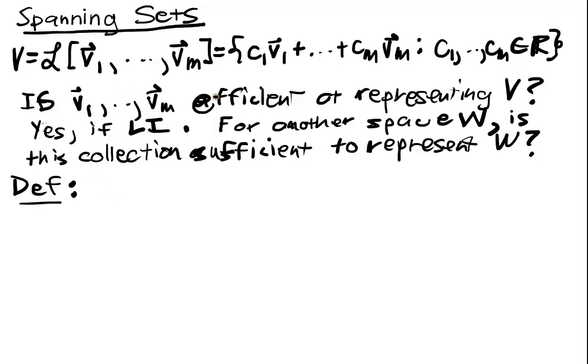So let's say V is this thing above, then if L of V1 up to Vm is equal to V,